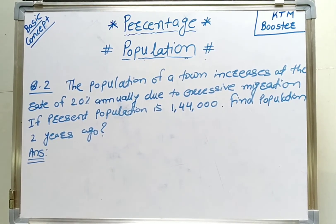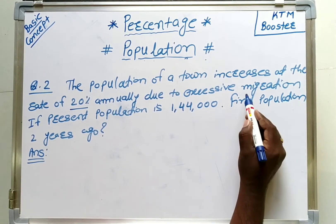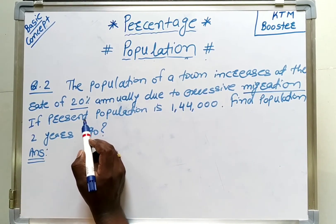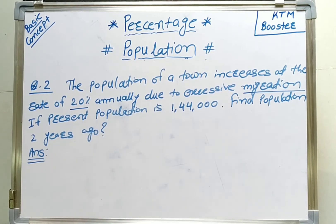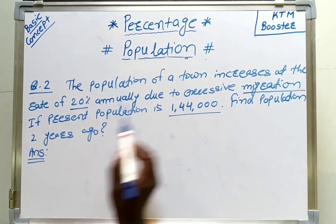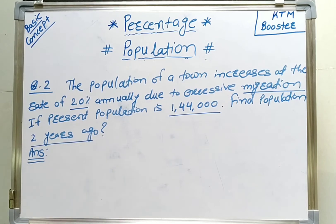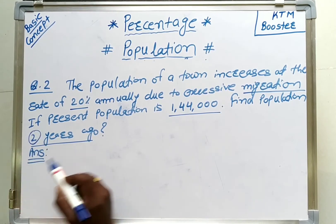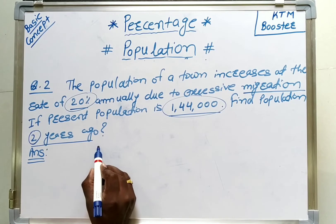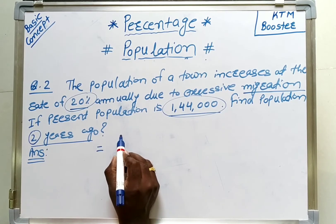Next question: the population of a town increases at the rate of 20% annually due to successive migration. The present population of the town is 1,44,000. What was the population 2 years ago? Here n is 2, r is 20%, and the present population is 1,44,000. The formula is P divided by 1 plus r upon 100, raised to n.